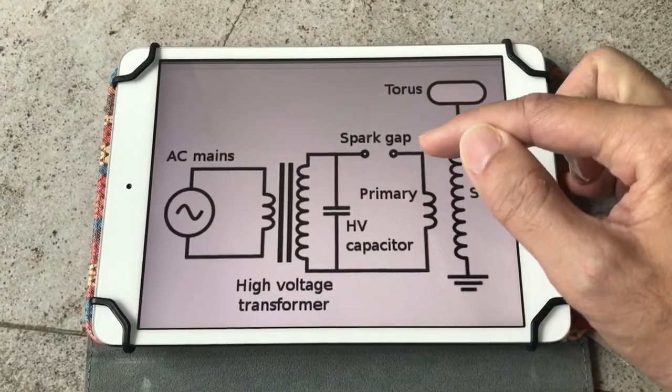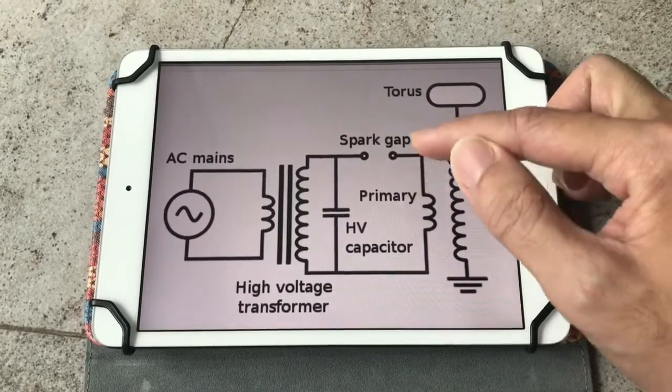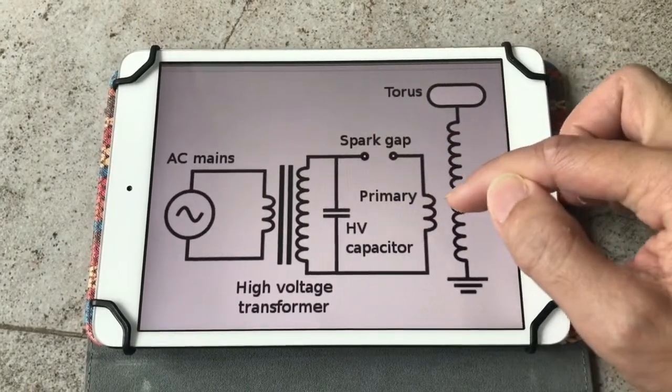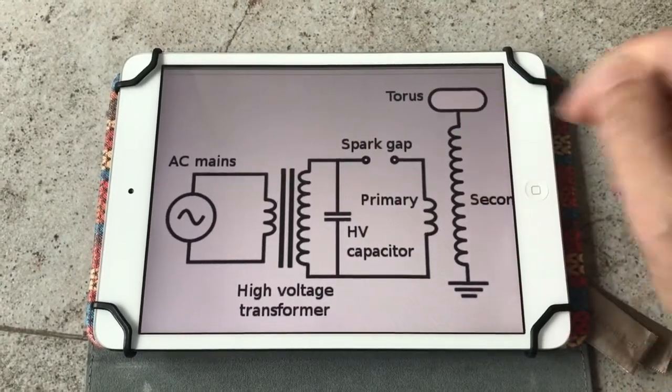Instead we have a spark gap here, and the spark gap basically acts as a switch to turn on and off the circuit, which will oscillate the primary coil, which will then in turn oscillate the secondary coil which produces the arc.